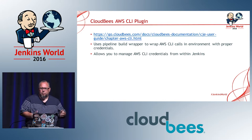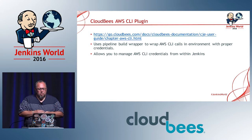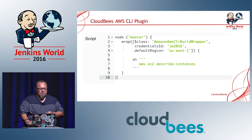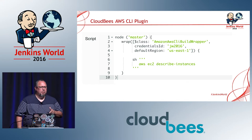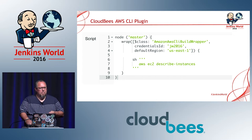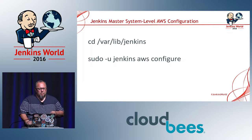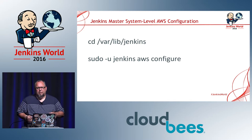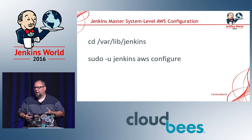Here's the CloudBees AWS credentials plugin, where you store your access keys and secret keys and give them an ID. There's also an AWS CLI plugin from CloudBees — the first one I showed you has been open-sourced, this one is not. This plugin lets you use a wrapper to wrap code. I'm using the with credentials approach, which is similar to the wrapper — I basically wrap all my code in this with credentials block and use the same credentials for every AWS CLI call that I make.